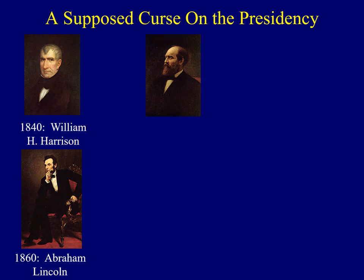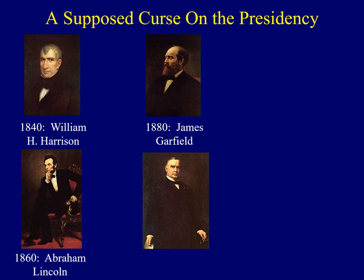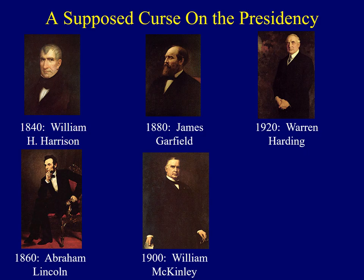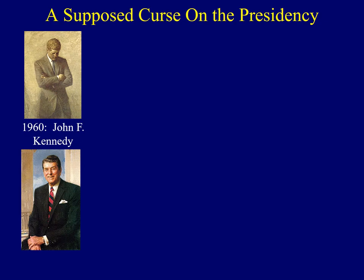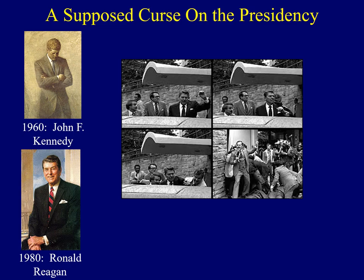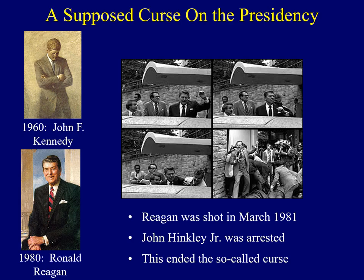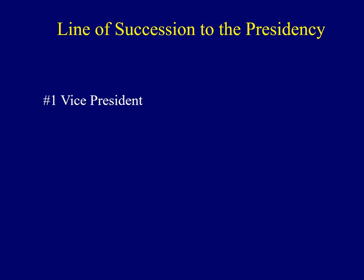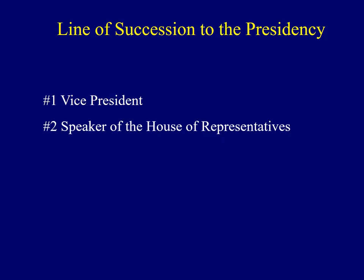Let's see how this curse turned out. Harrison was the first and he died only 30 days into his administration, elected in 1840. In 1860, Abraham Lincoln was assassinated by John Wilkes Booth. In 1880, James Garfield was assassinated. In 1900, William McKinley was assassinated. In 1920, Warren Harding suffered a heart attack and died. In 1940, Franklin Roosevelt had a brain aneurysm and died. The curse continued until 1960 — John F. Kennedy was assassinated. Then in 1980, Ronald Reagan was shot a couple of months into his presidency. His would-be assassin was John Hinckley Jr., who was soon arrested. This ended the so-called curse on the presidency.